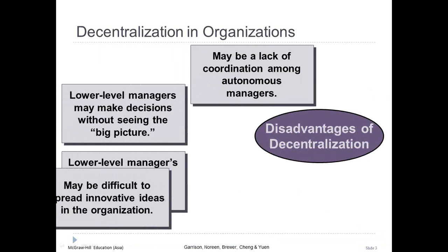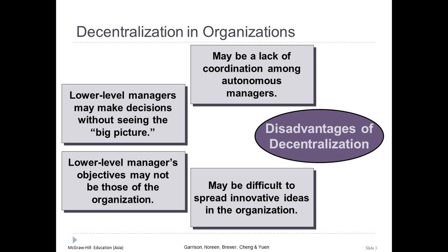The disadvantages of decentralization are as follows. Lower-level managers may make decisions without fully understanding the big picture. There may be a lack of coordination among autonomous managers — the Balance Scorecard can help reduce this problem by communicating a company's strategy throughout the organization. Lower-level managers may have objectives that differ from those of the entire organization, and this problem can be reduced by designing performance evaluation systems that motivate managers to act in the company's best interest. It may also be difficult to spread innovative ideas, but this can be reduced through effective use of intranet systems enabling globally dispersed employees to electronically share ideas.